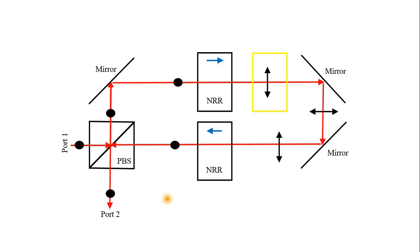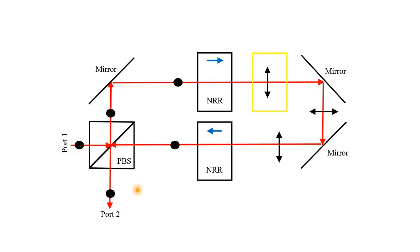Now for the other polarization — instead of vertical, we have horizontal polarization. Horizontal polarization is reflected from the beam splitter. It then passes through this device, which is now in the blue arrow direction, so it changes the polarization. But then it passes through the vertical polarizer. It reflects from a mirror and from another mirror. It passes again through the non-reciprocal rotator in the same direction, so it changes polarization again. Then it is reflected from the beam splitter and goes to port 2. So all the light coming in goes to port 2, and the polarization is conserved.